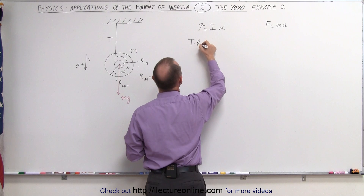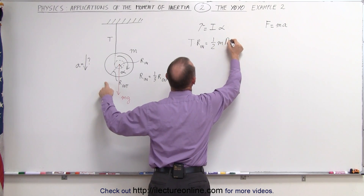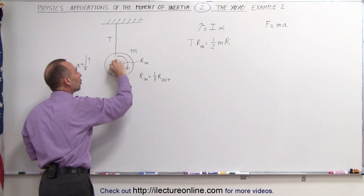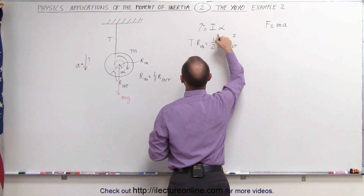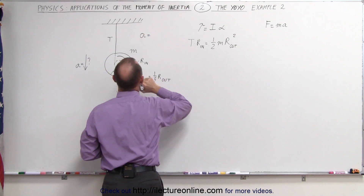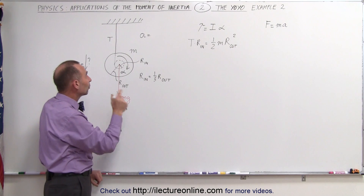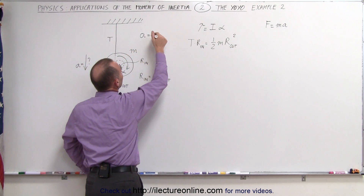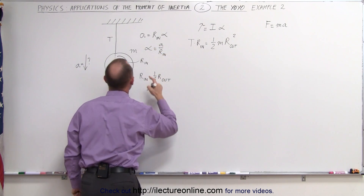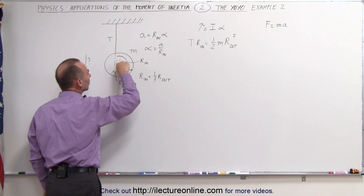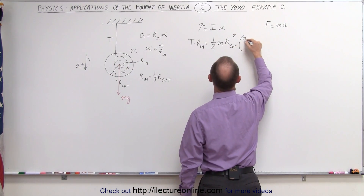So tension times r_inner is equal to the moment of inertia of the yo-yo, which is one-half the mass times the outer radius squared, times alpha. Now we have to be careful: the acceleration is caused by the rotation of the inner cylinder, not the outer cylinder. So we relate the acceleration as a equals r_inner times alpha, or alpha equals a divided by r_inner. We must make sure we understand that r_inner is what's causing the downward acceleration.